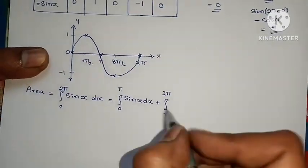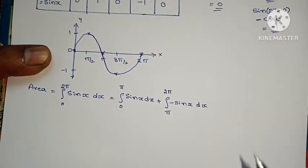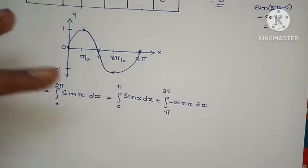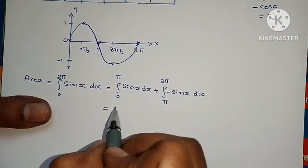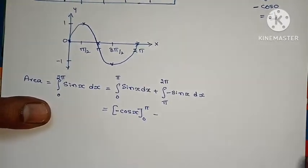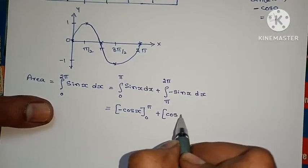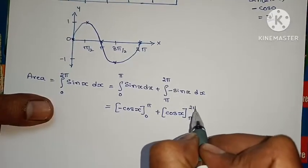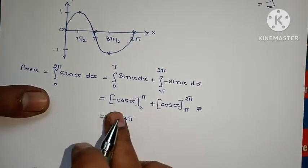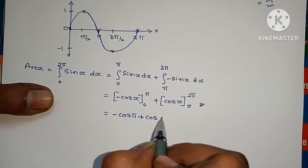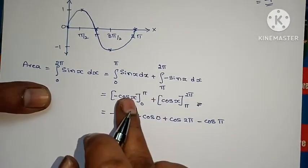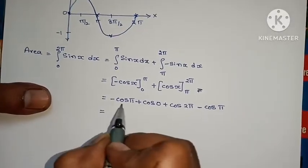From 0 to π, the curve is positive (above x-axis); from π to 2π, it is negative (below x-axis). So area equals integral from 0 to 2π of sin x dx. We divide the interval: integral from 0 to π of sin x dx, plus integral from π to 2π of (minus sin x) dx.